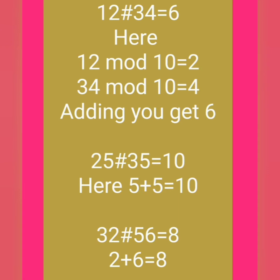Consider 12 ash 34 is equal to 6. I can write 12 as 12 mod 10 — using the modular function. 12 mod 10 is equal to 2, meaning when you divide 12 by 10 you get the remainder 2. 34 mod 10 gives remainder 4. The sum of these two remainders is 2 plus 4 equals 6. Next, 25 ash 35: the remainders are 5 plus 5 equals 10.